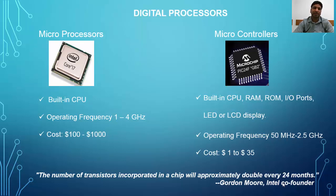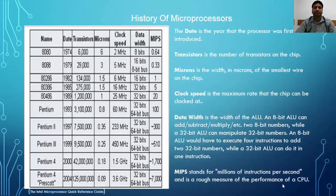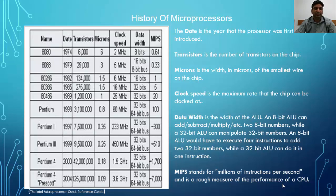Now let's look at the history of microprocessors. The first commercial microprocessor was made in the year 1974 and it has 6,000 transistors incorporated on it, and the smallest wire on the chip was 6 microns. The 8080 processor was able to execute 0.64 million instructions per second.